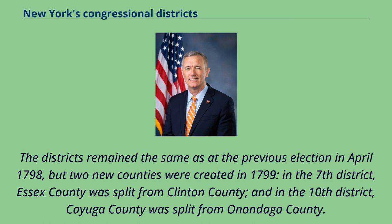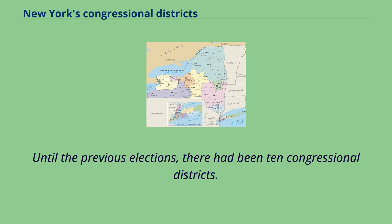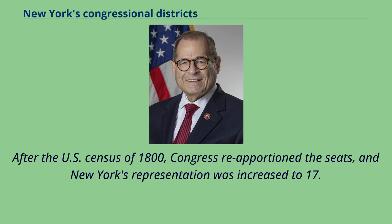The districts remained the same as at the previous election in April 1798, but two new counties were created in 1799: in the 7th district, Essex County was split from Clinton County, and in the 10th district, Cayuga County was split from Onondaga County. Until the previous elections there had been ten congressional districts. After the U.S. Census of 1800, Congress reapportioned the seats and New York's representation was increased to 17.